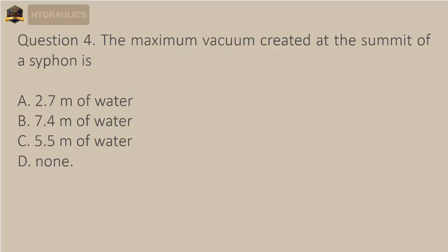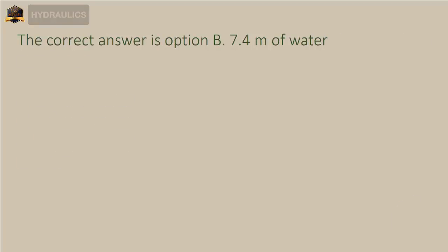Question 4: The maximum vacuum created at the summit of a siphon is — A) 2.7 meters of water, B) 7.4 meters of water, C) 5.5 meters of water, D) none. The correct answer is option B: 7.4 meters of water.